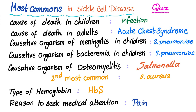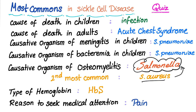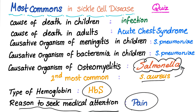But first, let me answer the quiz from last time. The most common cause of death in sickle cell disease in children is infection. The most common cause of death in adults is acute chest syndrome. The causative organism of meningitis in children is strep pneumo. Most common organism of bacteremia is strep pneumo. Most common organism of osteomyelitis is salmonella, second most common is staph aureus. Salmonella has exceeded staph aureus because there is no spleen, and salmonella is an encapsulated organism. The most common type of hemoglobin is hemoglobin S. The reason to seek medical attention is pain — the vaso-occlusive crises are very painful.